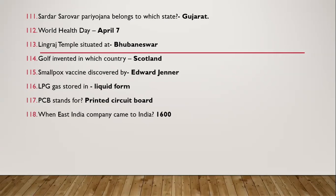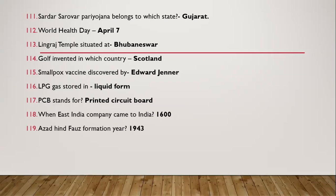Question 117: When did the East India Company come to India? They came in 1600. Question 118: Azad Hind formation year — it was in 1943.